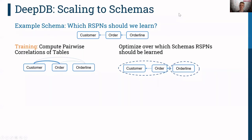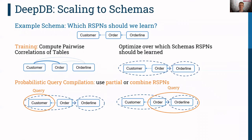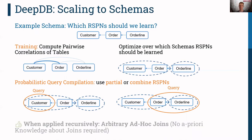In contrast, DeepDB scales to schemas efficiently. We first compute the pairwise correlation of the tables, and based on this information we decide for which joins to learn models. For instance, we learn a model over the join of customers and orders — since there is a large correlation between those tables — and a single order lines model. At runtime, we can query a partial relational sum-product network or combine several of them; we coined this probabilistic query compilation. Applying this technique recursively, we can handle arbitrary joins on the schema without knowing which joins will appear at runtime.